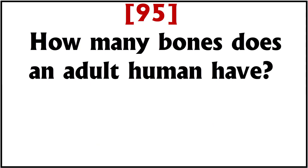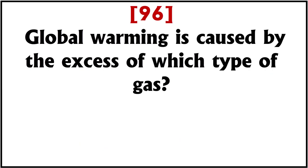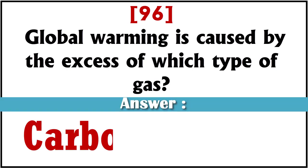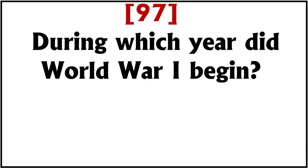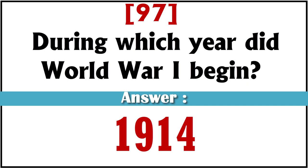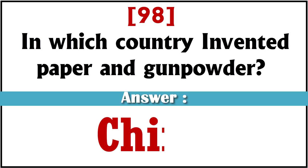How many bones does an adult human have? 206 bones. Global warming is caused by the excess of which type of gas? Carbon dioxide. During which year did World War One begin? 1914. In which country were pepper and gunpowder invented? China.